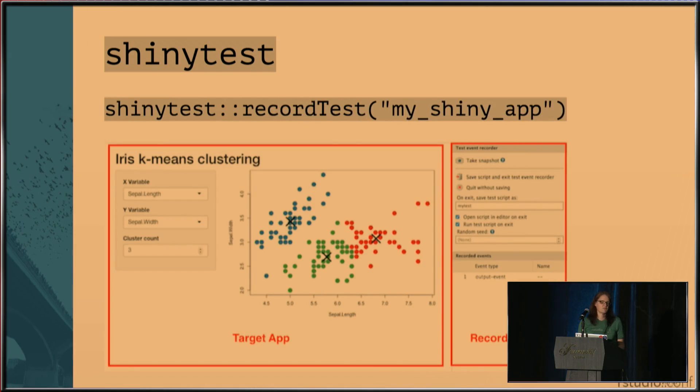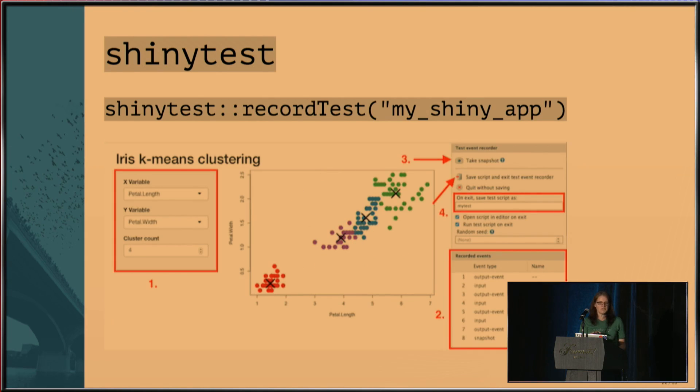First you start by running record_test. This will open up an interface where you have your target app on the left and a recorder app on the right. And what you would do is over in your target app, this is number one in the slide here, you make changes to your application, you do controls, you act as if you were a user. And then over in number two, over here in your recorder app, you'll notice that it's recording everything you do. At some point you take a snapshot, which is number three up here, then you give it a name and save it, which is number four there. So you're basically recording what a user would do and setting up that state.